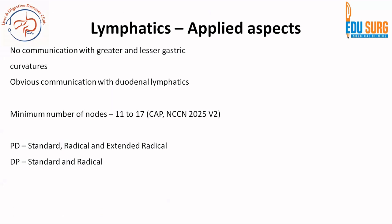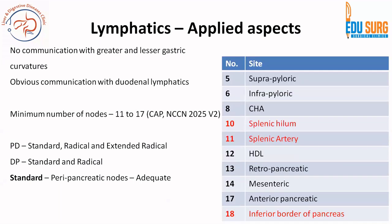We know that there are three types of lymphadenectomies when it comes to pancreaticoduodenectomy: there is a standard, radical, and extended radical PD. Whereas when it comes to distal pancreatectomy, there is a standard and radical. In standard surgeries, the first ring of nodes is adequate, whereas radical and extended radical have not shown survival benefits so far.